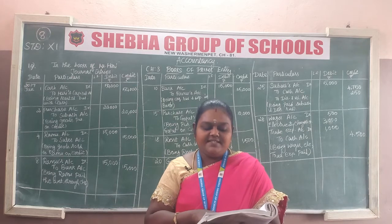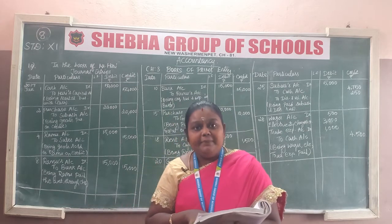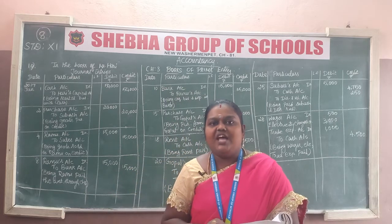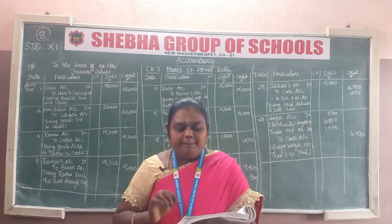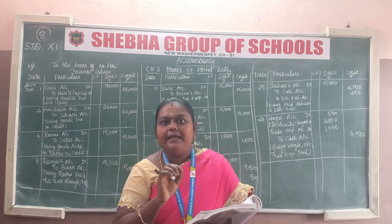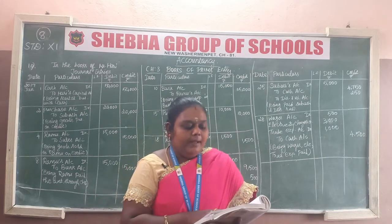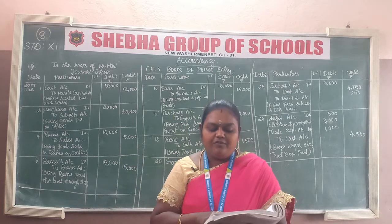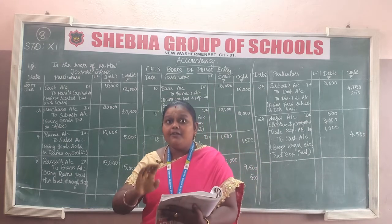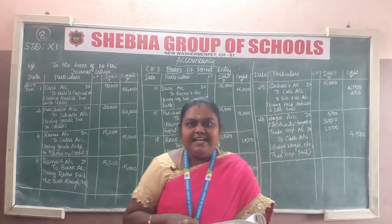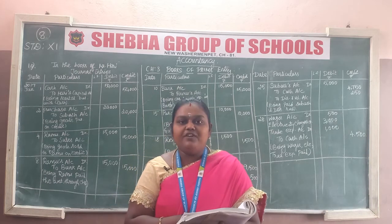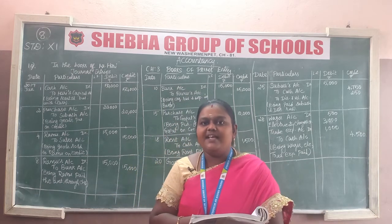Next transaction: bill drawn by Shang was accepted for Rs. 50,000. Shang is the receiver. Entry: Shang's account debit to bills payable account. Narration: being bill drawn by Shang was accepted.